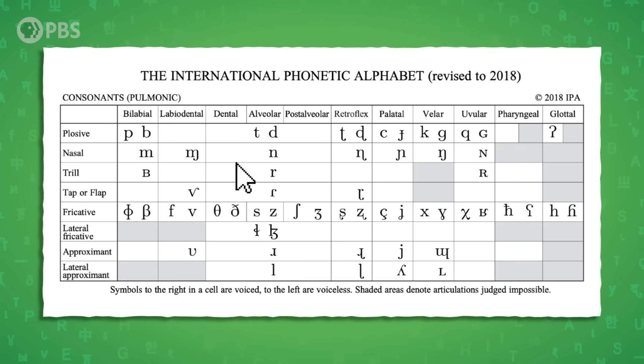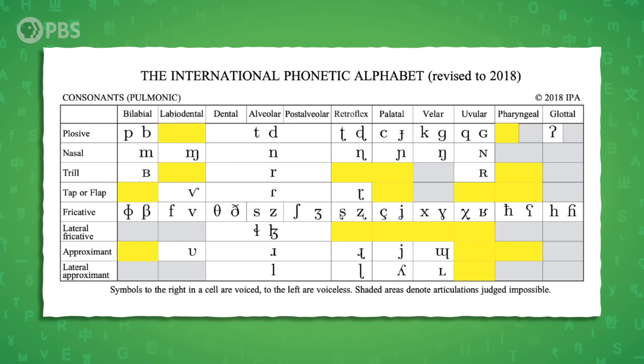The IPA chart is a bit like the periodic table, in that its structure tells us a lot about the properties of each sound. This means that even if you don't know a symbol immediately, you can figure out what it sounds like based on its row and column. Or you can look up a clickable IPA chart where you can click on each symbol and hear it pronounced — I've tried it, it's pretty fun. The empty white boxes are sounds that could exist but haven't been found in any known language yet, while the shaded gray boxes are sounds that we just don't think the human body is capable of making.